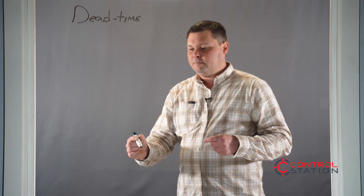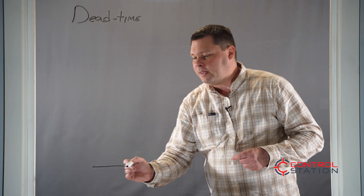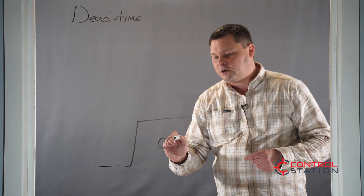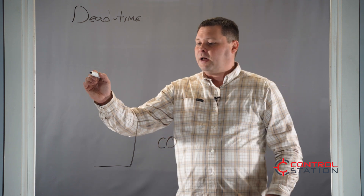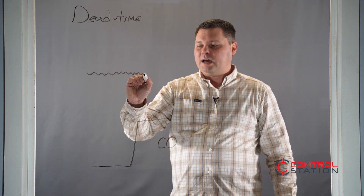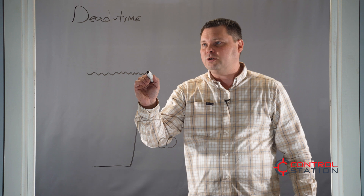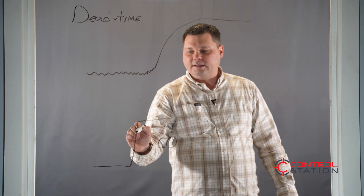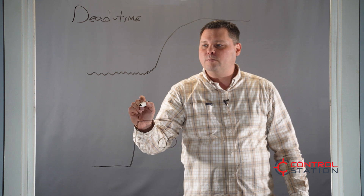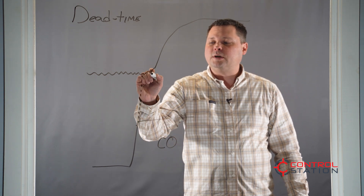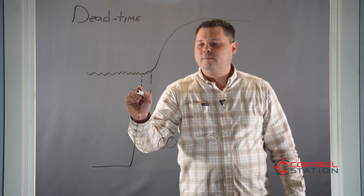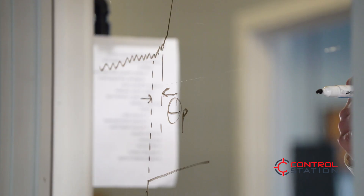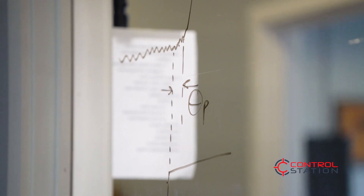So what is dead time? Dead time is the time it takes from when you make a change to the output. So if this is our controller output and we've got a process variable, it's the time it takes from when you make a change till something actually starts to occur in the process. It's the difference from the time you made the change till something actually started to happen. This difference is known as theta, or the dead time of a system. It is the delay.